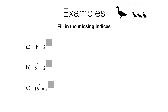This video is about writing powers with a different base. Let's take a look at example a. We've got 4 to the power of 3 equals 2 to the power of what? So we've got this power here which has a base of 4 and we need to write it as a power with a base of 2. We can do this by realising that 4 is already a power of 2.